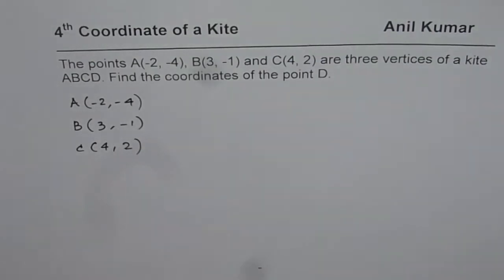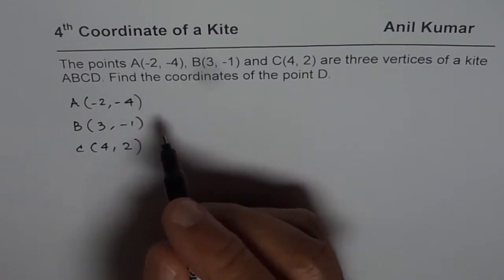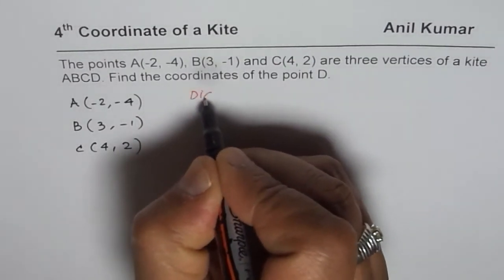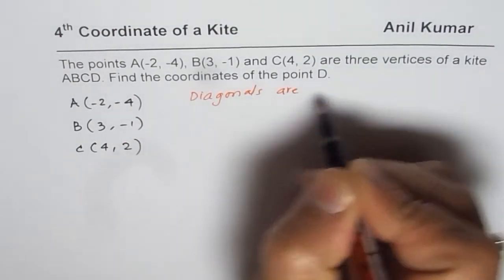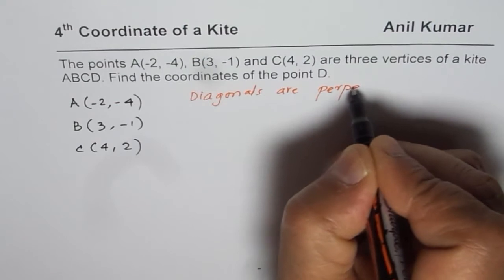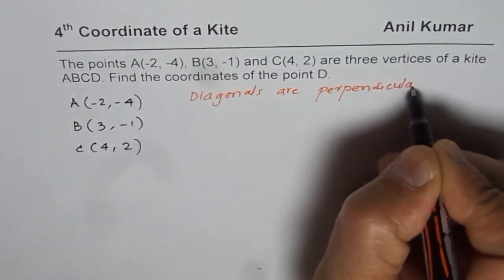Whenever you have a question related to a kite, the major property we are going to explore is that the diagonals are perpendicular. That is important to understand — diagonals are perpendicular.